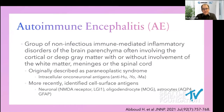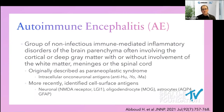Autoimmune encephalitis is a group of non-infectious immune-mediated inflammatory disorders of the brain parenchyma, often involving the cortical or deep gray matter with or without involvement of the white matter, meninges, or the spinal cord. That definition is from a publication in the Journal of Neurology, Neurosurgery and Psychiatry that came out earlier this year, covering best practices in autoimmune encephalitis, which I'll refer to throughout the talk.